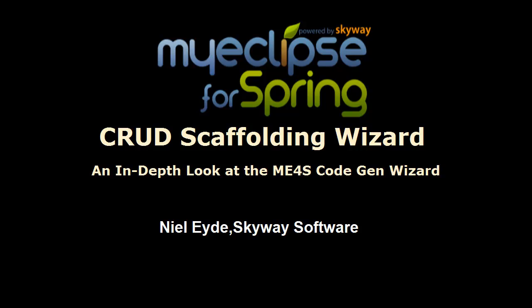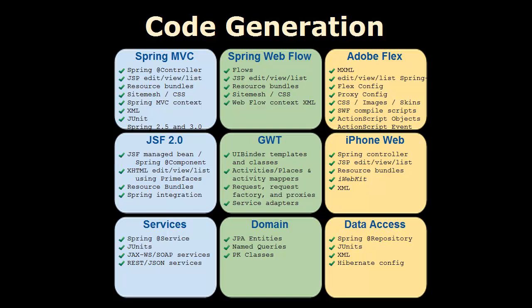So this screencast will be focused just on the scaffolding wizard. We're not really focusing on any particular use case, even though MyEclipse for Spring has a lot of different code generation options. The wizard is what you use to select and use those options and generate for different technologies. We're really going to focus on how you use the wizard so you can see exactly how easy it is and what all your configuration options are.